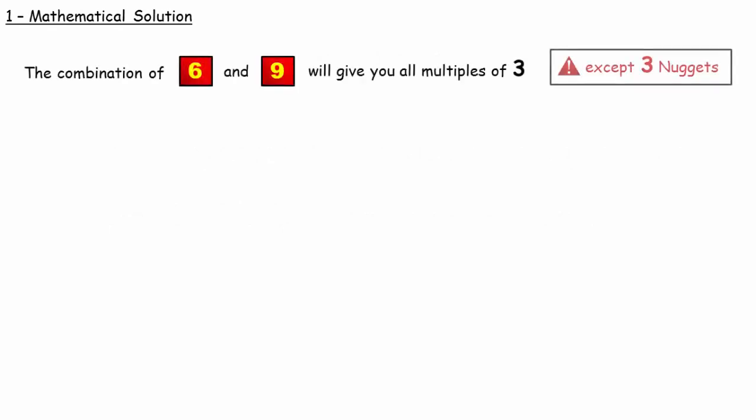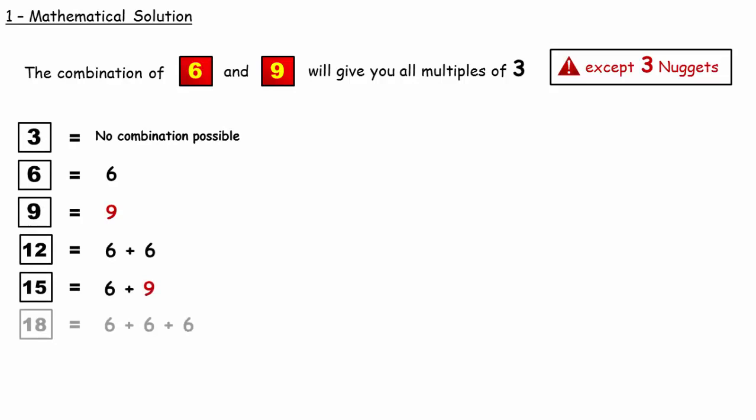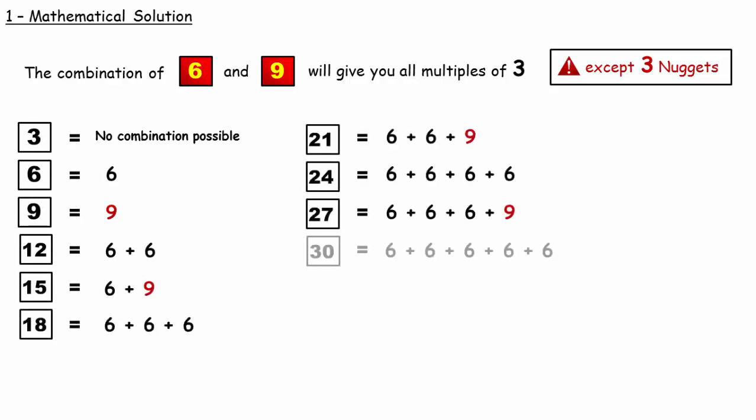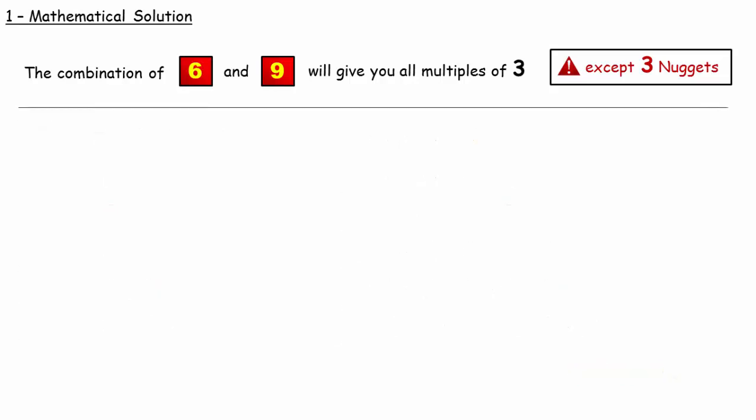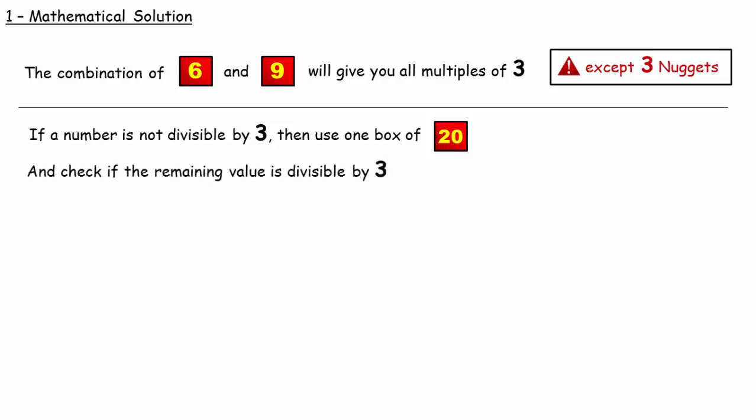Let's see the mathematical solution first. The combination of 6 and 9 will give you all the multiples of 3 except 3 nuggets. If a number is not divisible by 3, then try to use one box of 20 and check if the remaining value is divisible by 3.